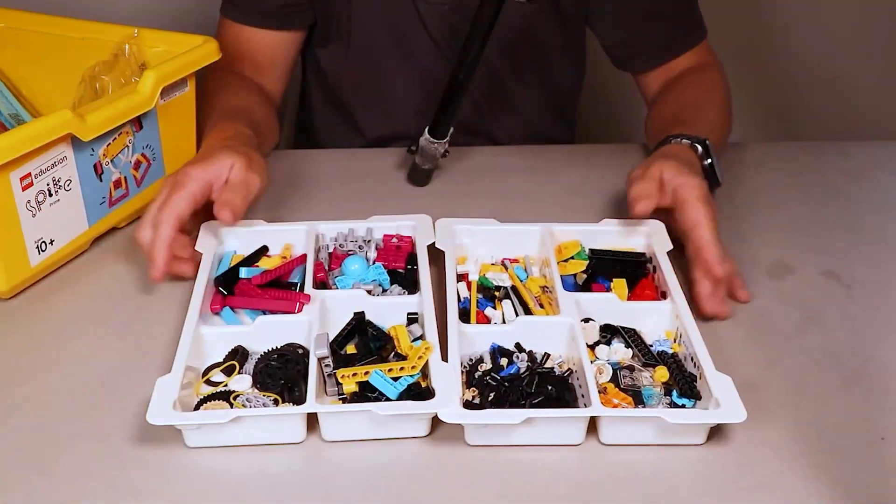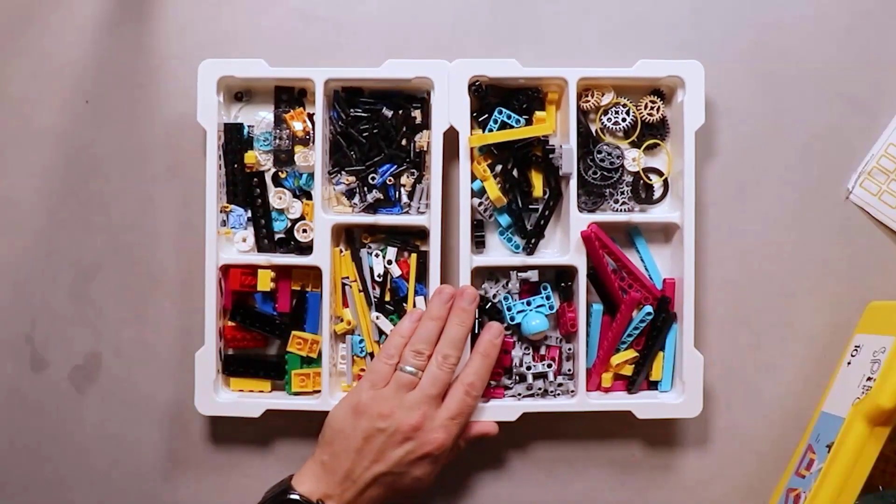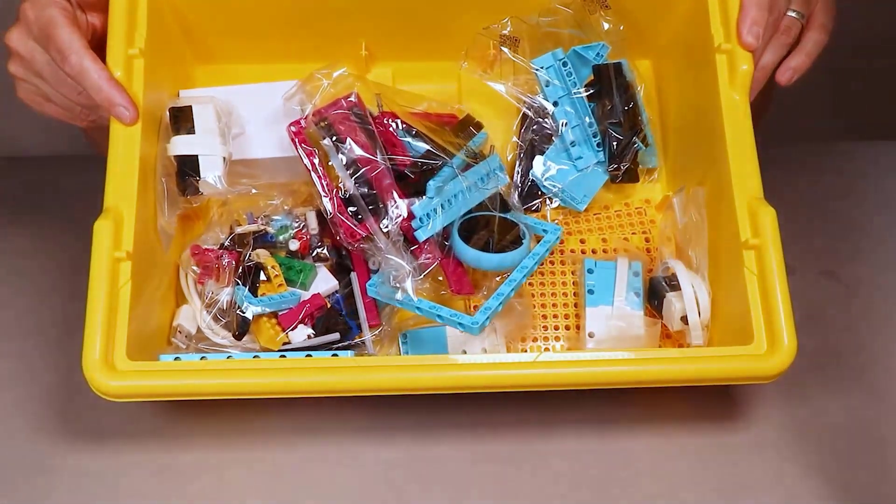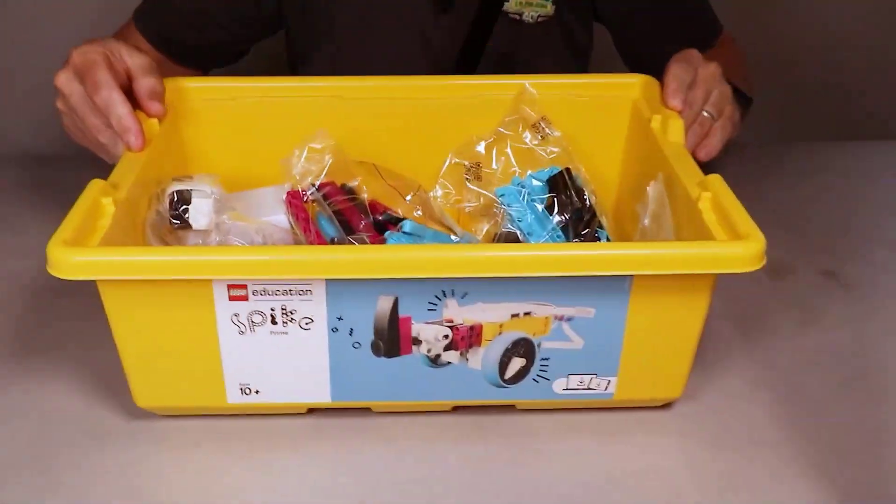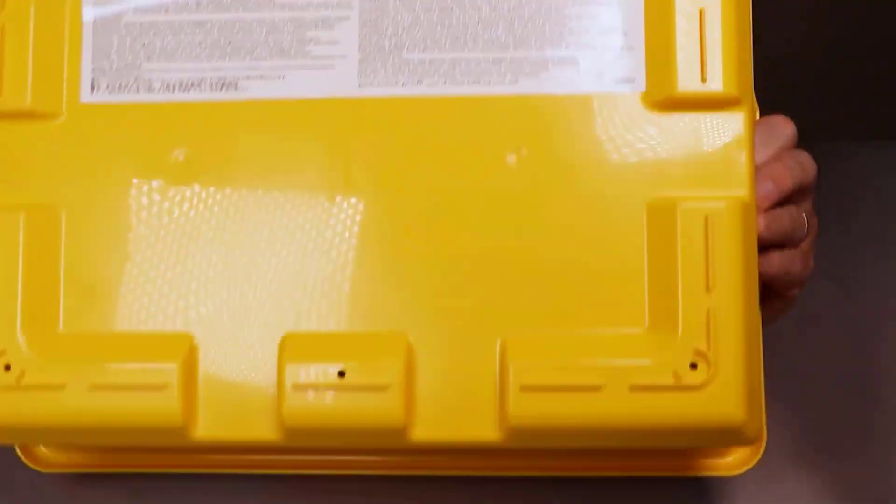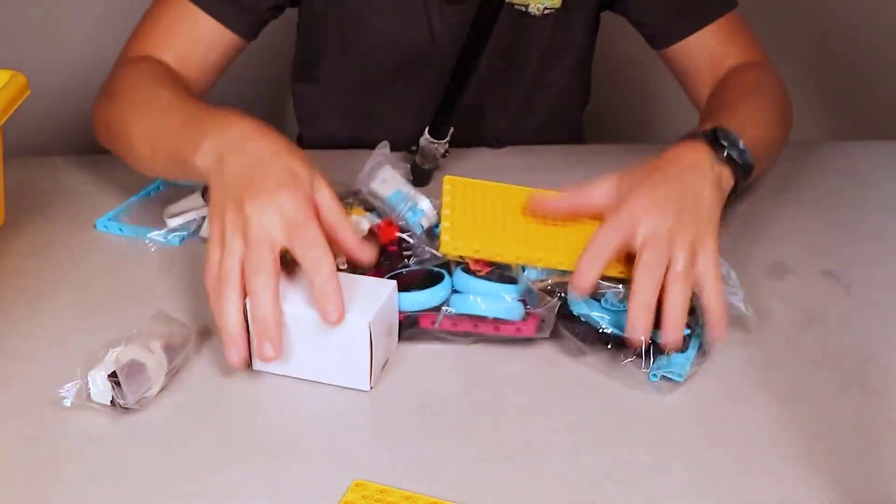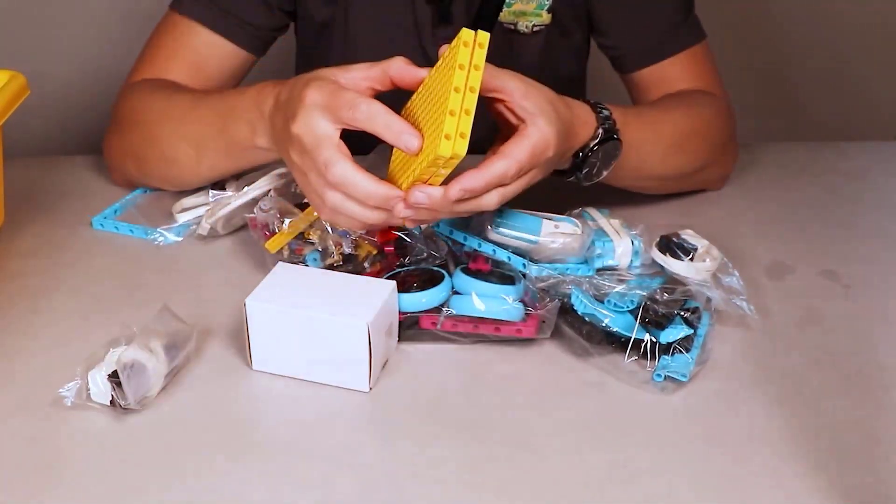Now that you have your trays sorted and organized, you can set those together. That's always going to go at the top of your box. But we still have lots of unbagging to do. Go ahead and look into your tray. Probably the first thing that we'll do is just take everything out so we can see it all.